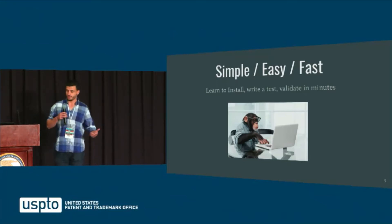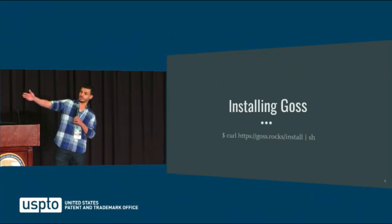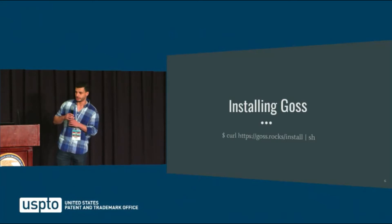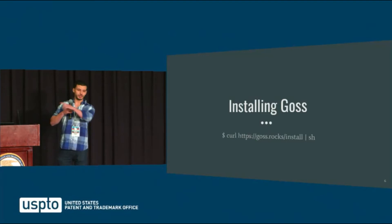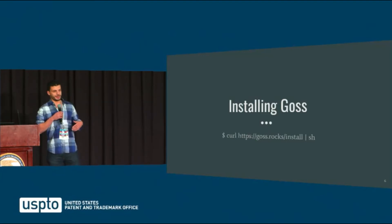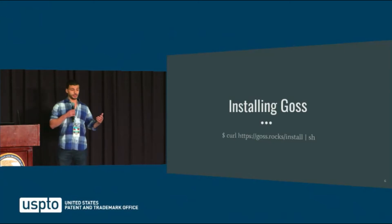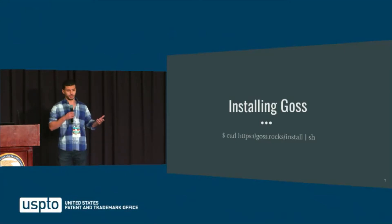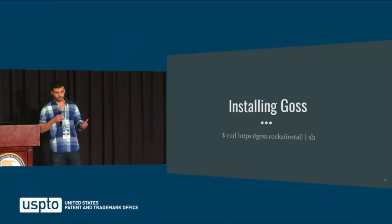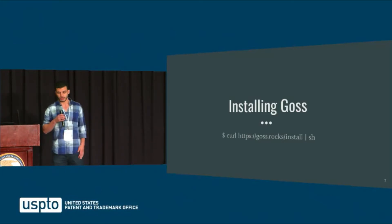We'll start with the very first step: you need to install it. Just do that one-liner to install GOSS. I'm sure there are some security folks shaking their heads in disappointment — don't do that on a production box. Download the binary, make it executable, and put it in your path. The binary is only 10 megabytes — actually less — so it's a really quick download. There are no other external dependencies, so you don't have to have Ruby or Python or anything installed on your server.